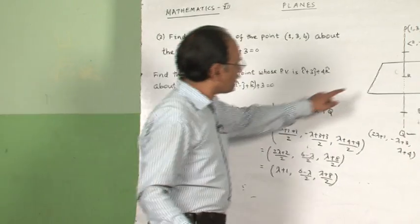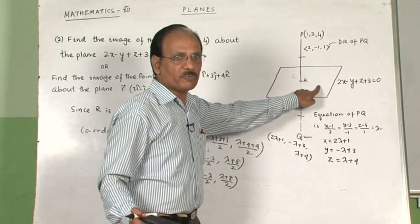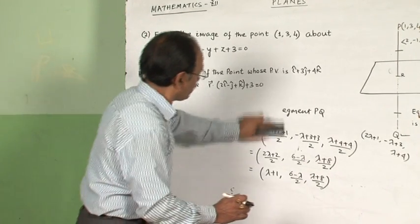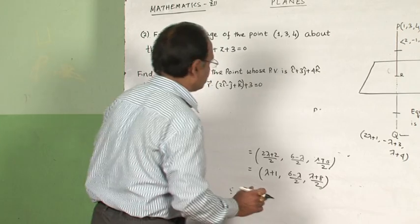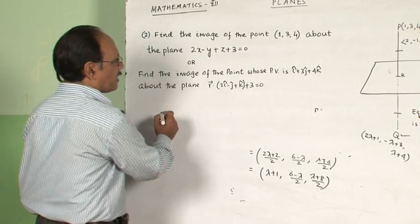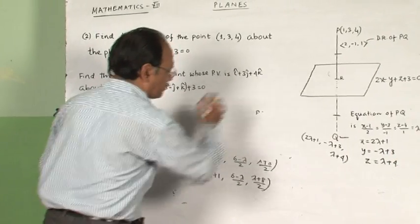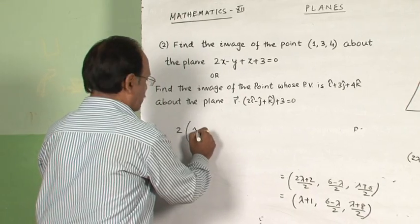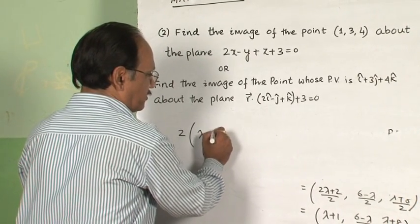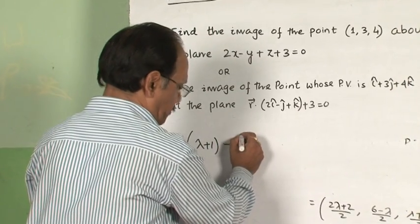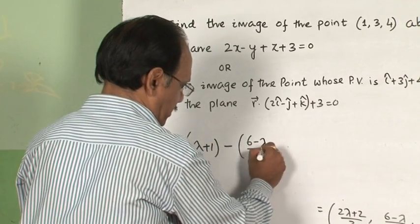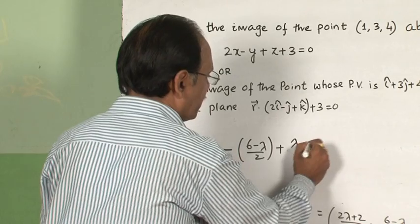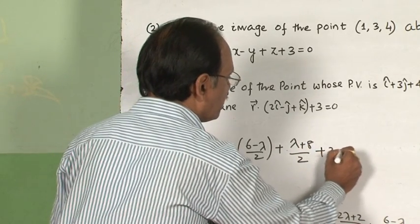Since point R is lying on the plane, it will satisfy the equation of the plane. So we write: 2(λ+1) minus (6-λ)/2 plus (λ+8)/2 plus 3 is equal to 0.